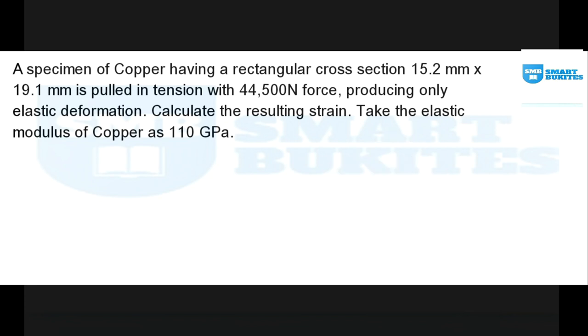So for this, we are told that a specimen of copper has a rectangular cross-section. We are told that one specimen of copper is a rectangle.